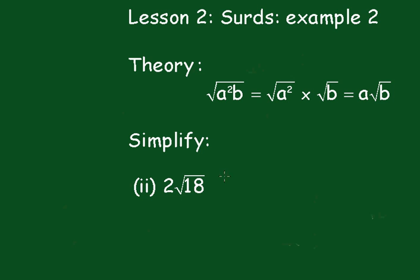Okay, now you'd write that as 2 times the square root of, now the perfect square is 9, that's 9 times 2, which equals 2 times the square root of 3 squared times the square root of 2, which is 2 times 3 times root 2.